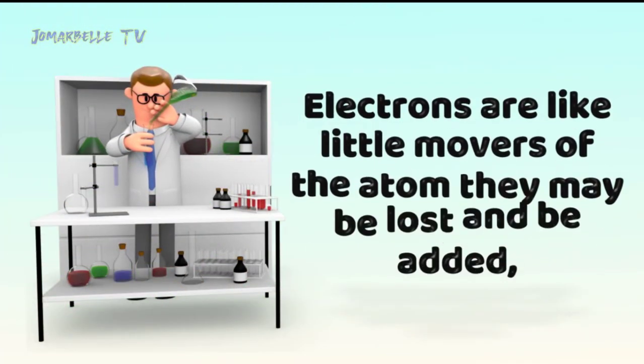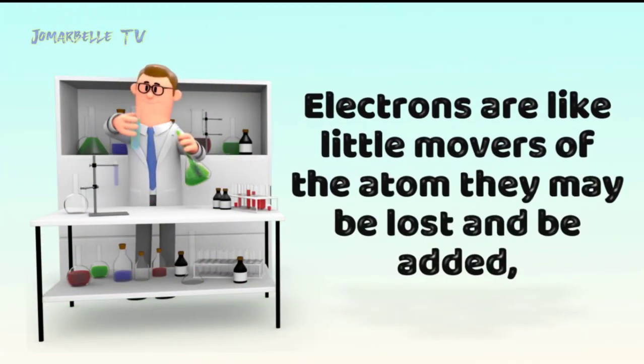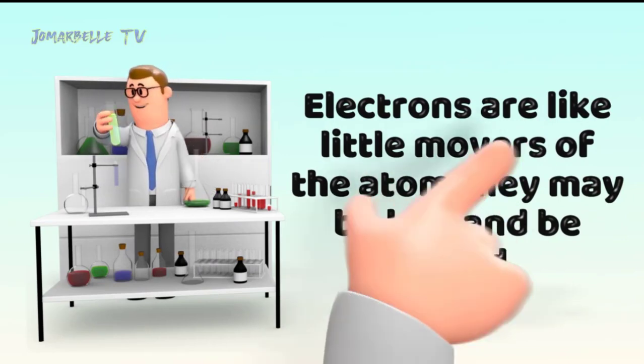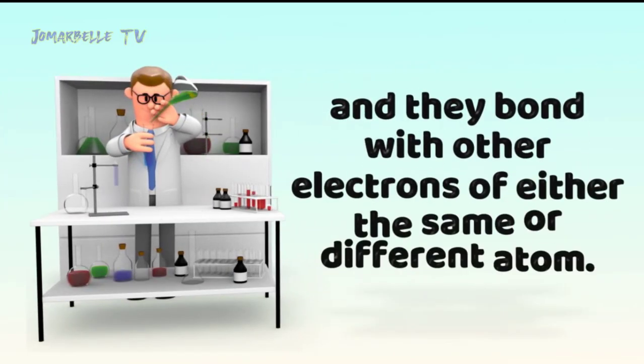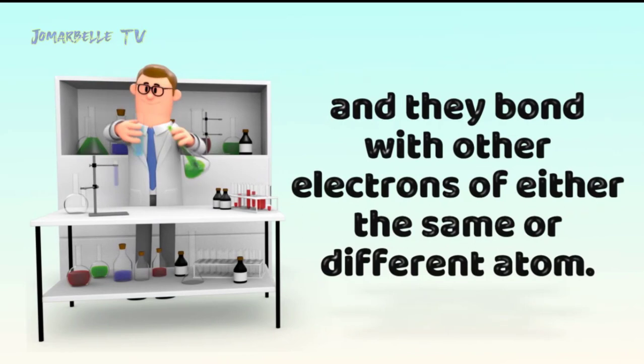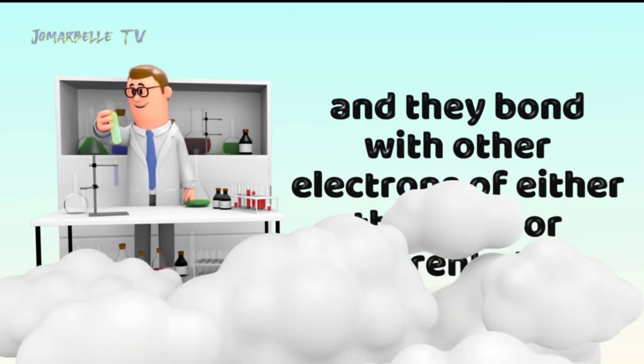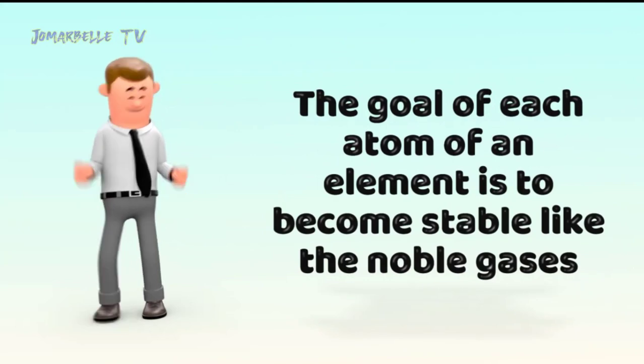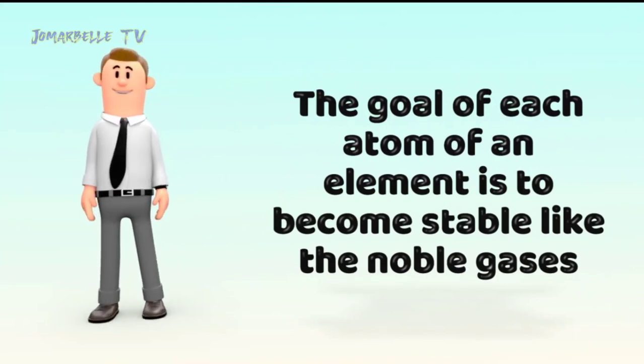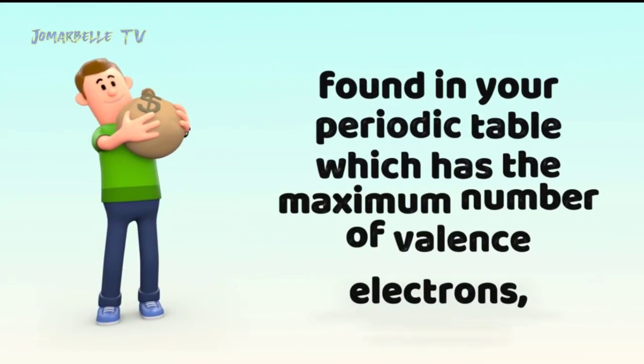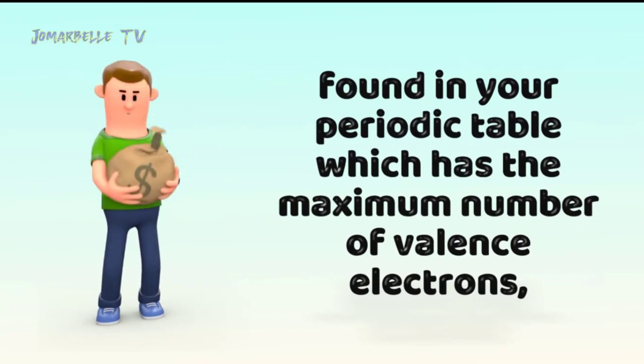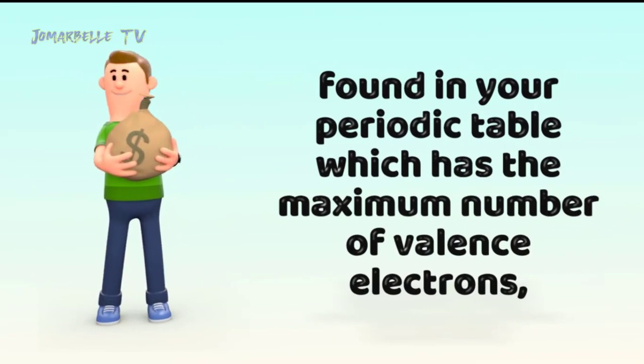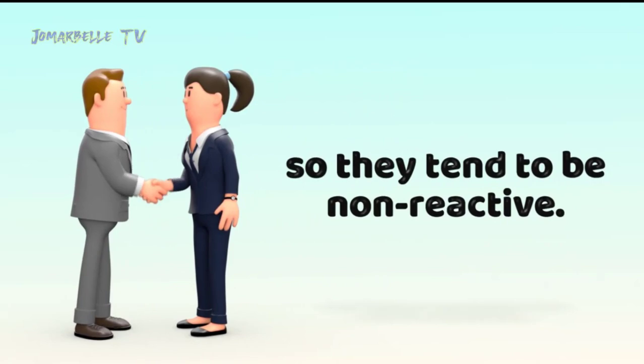Electrons are like little movers of the atom. They may be lost and be added and they bond with other electrons of either the same or different atoms. The goal of each atom of an element is to become stable like the noble gases found in your periodic table which has the maximum number of valence electrons. So they tend to be non-reactive.